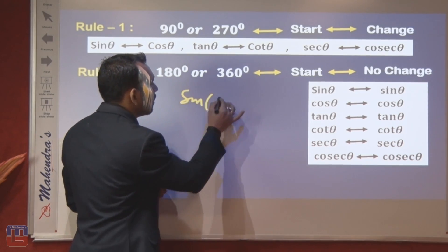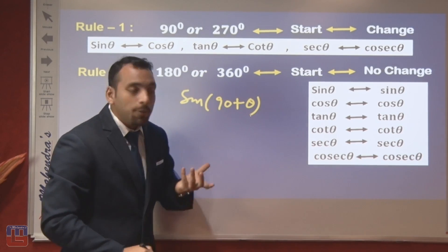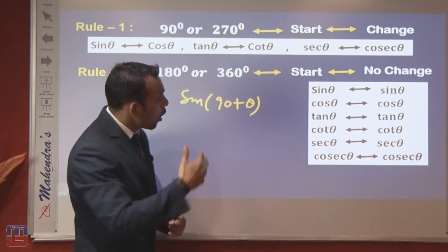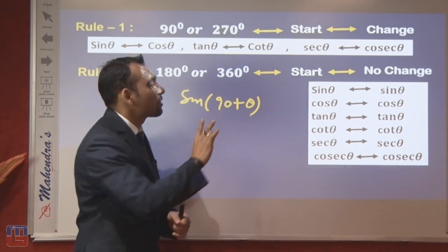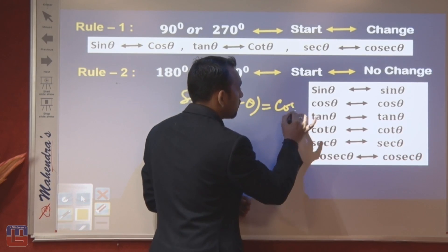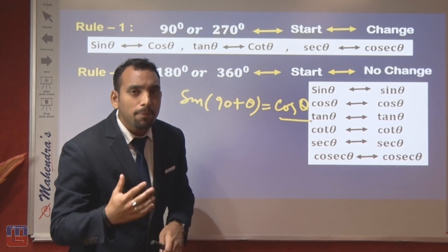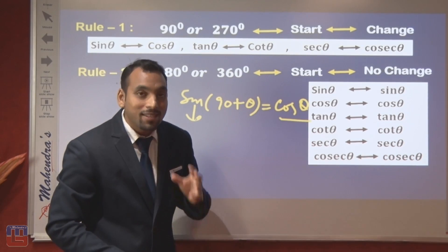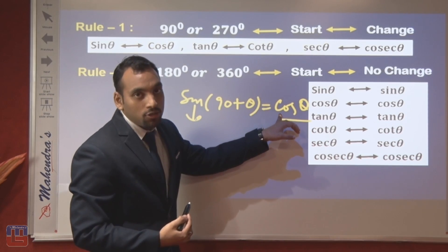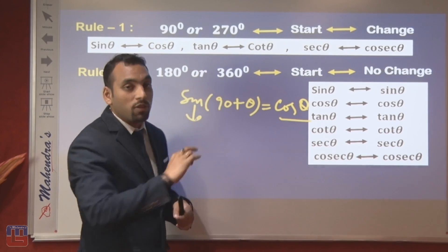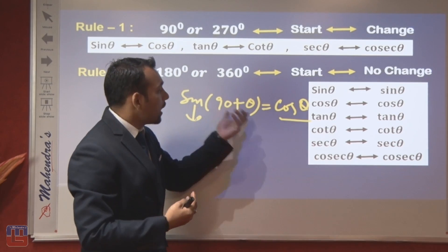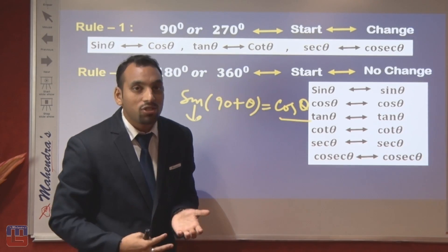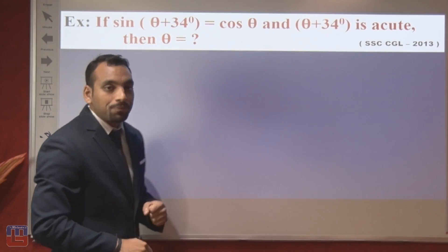Let's take an example: sin(90° + θ). Since we have 90° + θ, the function will change — sine changes to cosine. Now, 90° + θ lies in the second quadrant, and in the second quadrant, sine is positive. So sin(90° + θ) = cos θ (positive). Remember: 90° ± θ and 270° ± θ always change; 180° and 360° do not change.